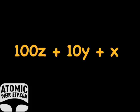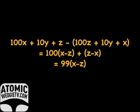XYZ equals 100X plus 10Y plus Z. You subtract its reverse, which is 100Z plus 10Y plus X, and then you get an equation that looks like... You get the idea.